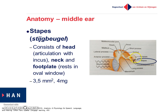The third and last of the three middle ear bones is the stapes — 'steigbeugel' in Dutch. It consists of a head, which articulates with the incus, a neck forming a rounded bow, and a foot plate. With this foot plate it rests in the oval window, and behind the oval window you'll find the inner ear. The stapes is the tiniest bone in the human body, about three and a half millimeters and only four milligrams.